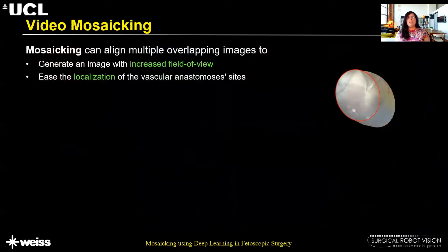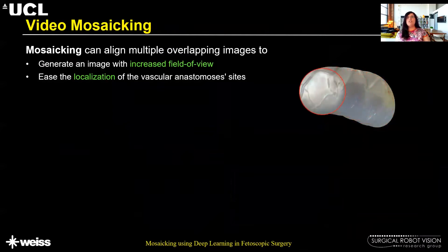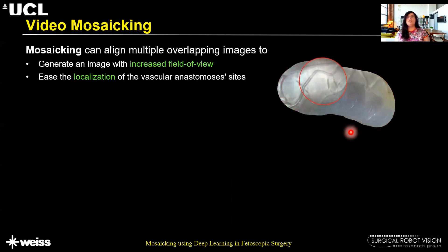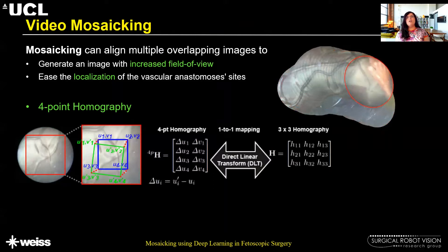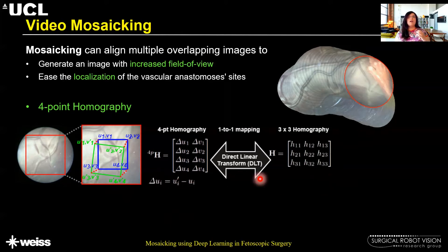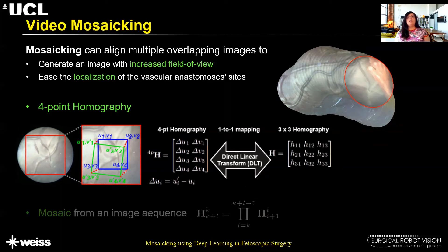Video mosaicing aligns multiple overlapping images to generate an image with an increased field of view, which can help clinicians better identify anastomosis sites during the TTTS photocoagulation procedure. In our work we use a four-point homography representation, where four points represent the displacement of the four corners of a patch pair used for training our network. Four-point homography is related to the 3×3 homography via a direct linear transformation. Mosaicing from an image sequence is generated by computing pairwise homographies between consecutive frames and then computing relative homographies with respect to a reference frame.